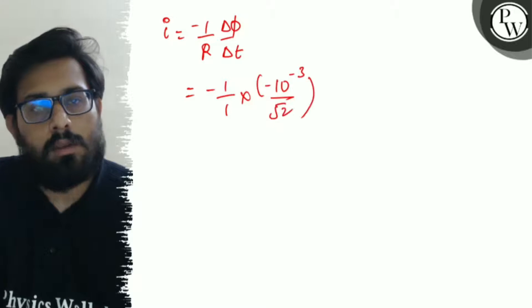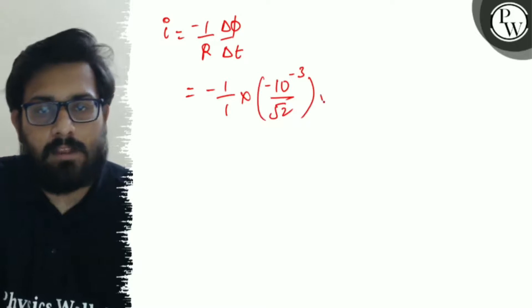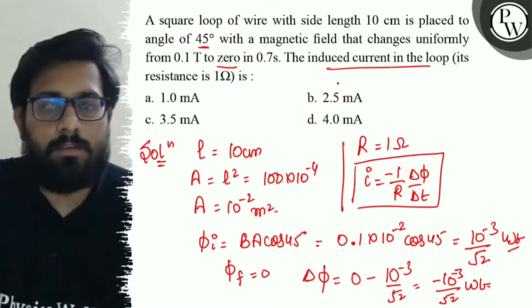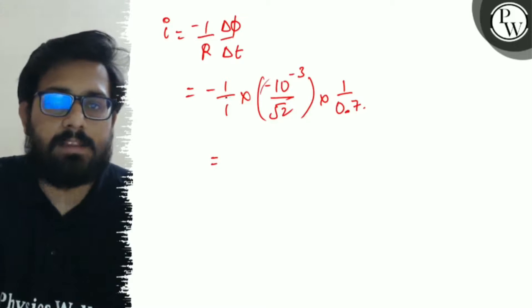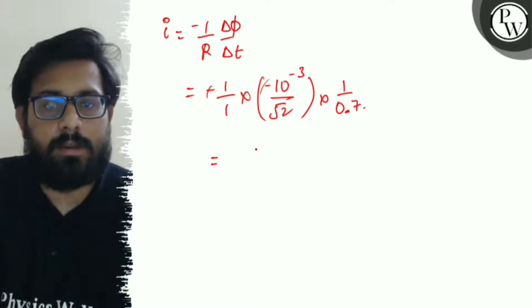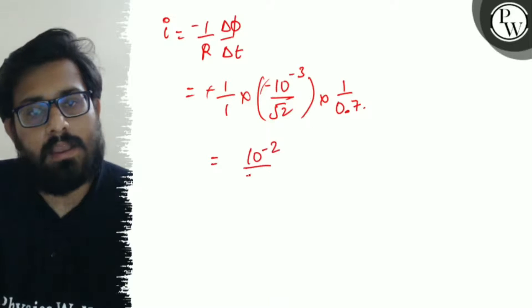Minus minus cancels out, so this can be written as 10 to the minus 2 by 7 root 2.